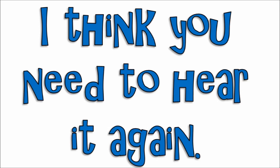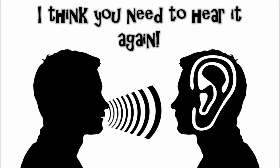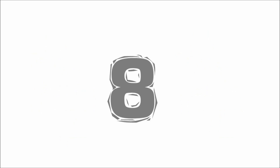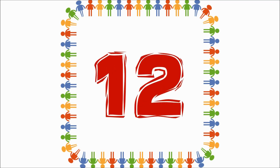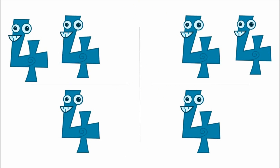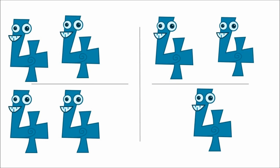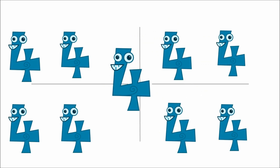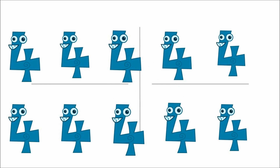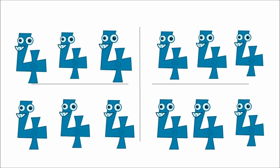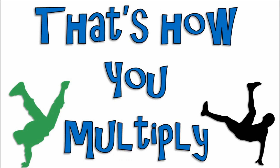I think you need to hear it again — one more time! One four is four. Two fours are eight — that's really great! Three fours are twelve. Four fours are sixteen. Five fours are twenty. Six fours are twenty-four. Seven fours are twenty-eight. Eight fours are thirty-two — that's true! Nine fours are thirty-six. Ten fours are forty. Eleven fours are forty-four. Twelve fours are forty-eight. That's how you multiply by the number four. So memorize this weird little song. Keep it in your mind so you can multiply any time.